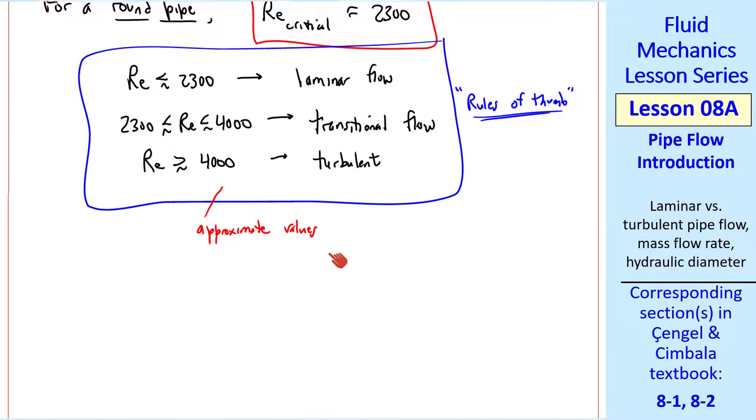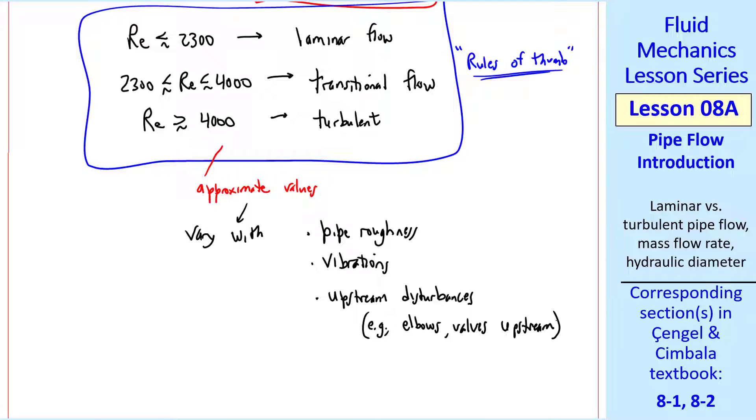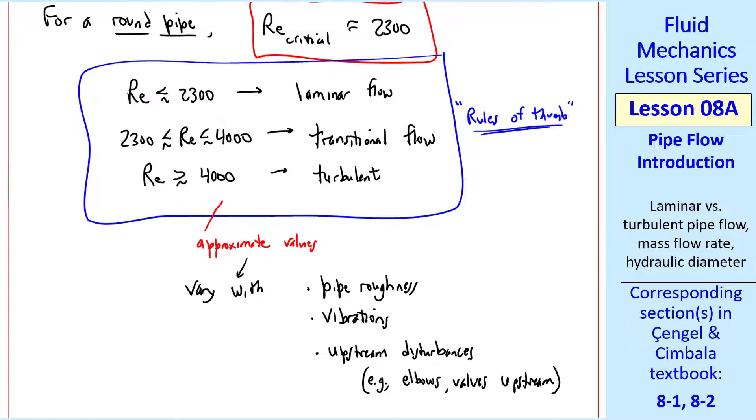I'll make a list of how these values can change. They would vary with pipe roughness, vibrations, upstream disturbances, for example, elbows or valves in the flow upstream that disturb the flow and can cause it to be turbulent or transitional, even for Reynolds numbers in the laminar range. So keep in mind that these values are not set in concrete. They vary, but we'll use these values to analyze our problems.